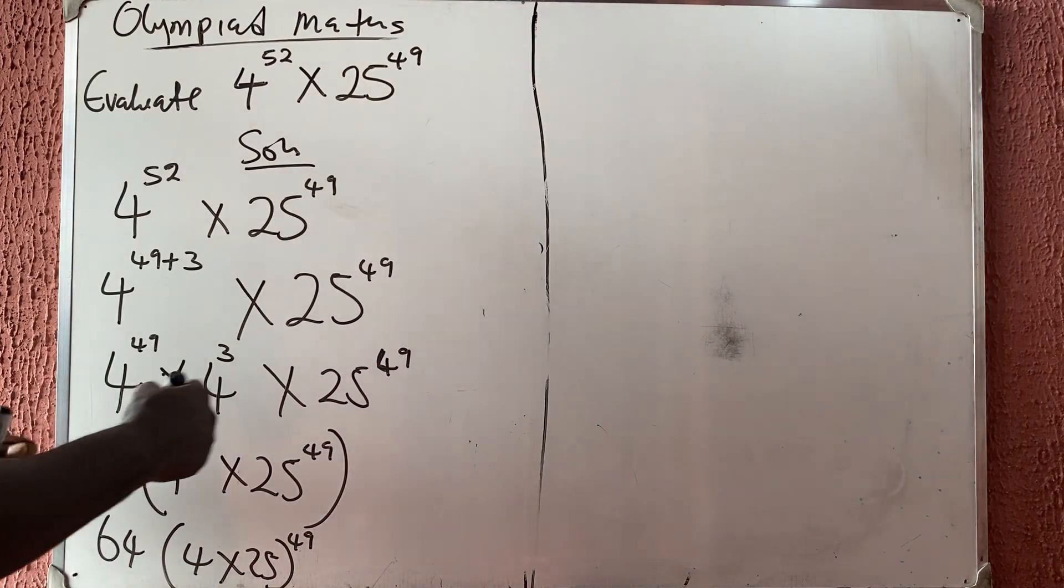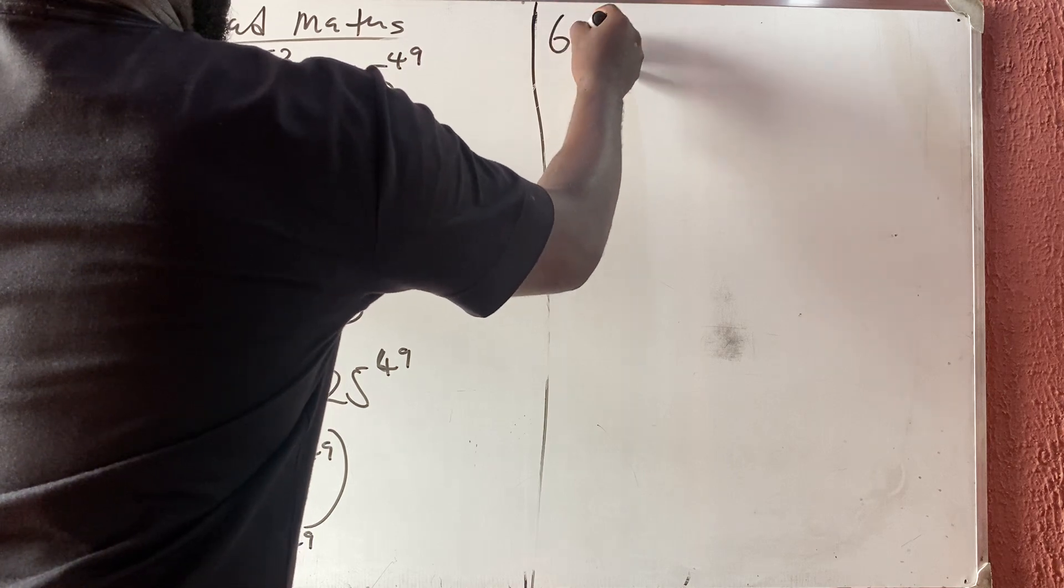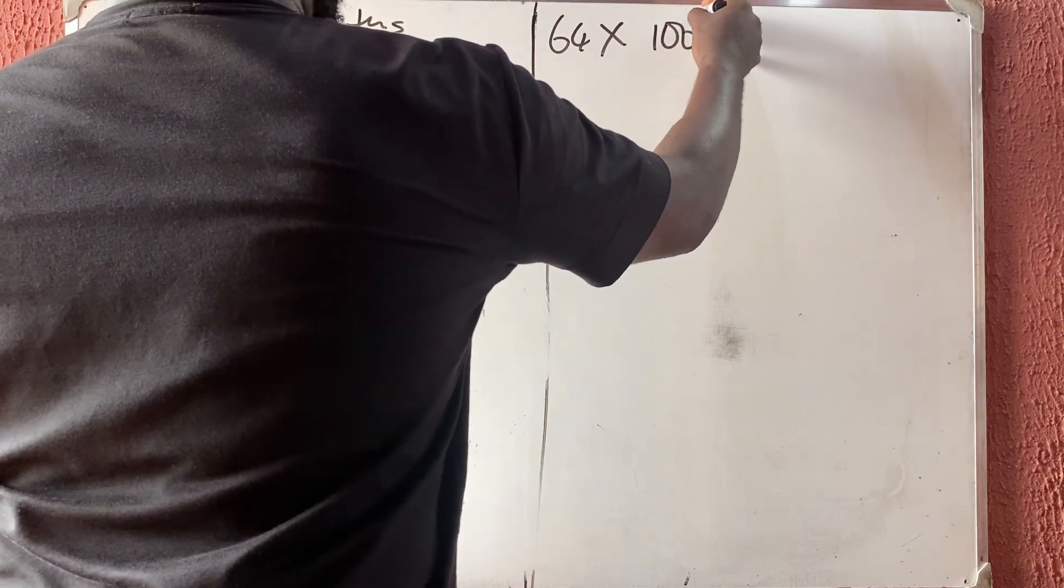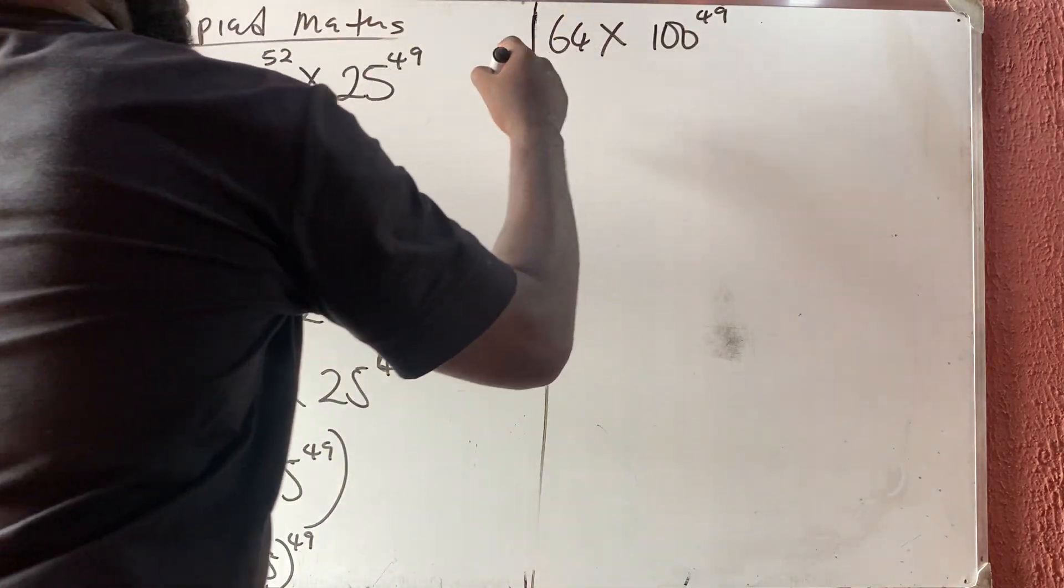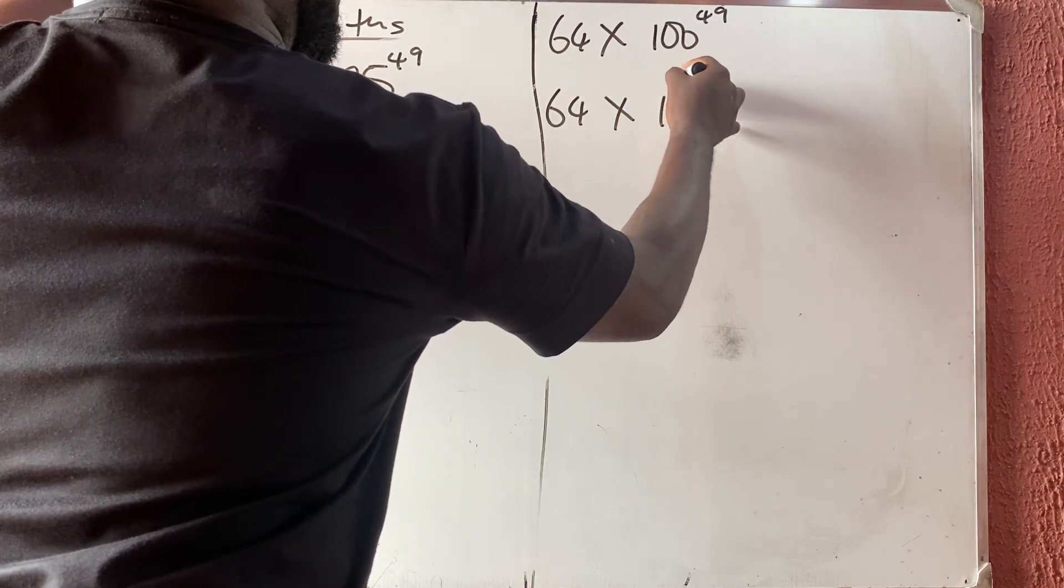So automatically I'm done. This is now what? 64 times, this will give me 100, so 100 raised to power 49. So this is now 64 times 10 raised to power 2, then bracket 49.